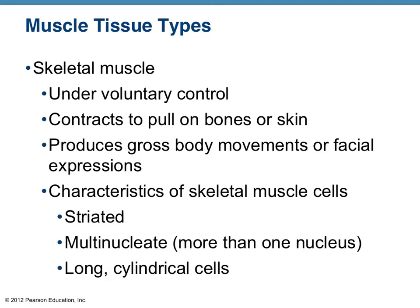Skeletal muscle is also called voluntary muscle — it's under voluntary control. We're not talking about reflex movements, but you can decide to move your arm, flex your bicep, whatever it may be. Skeletal muscle is the main type of muscle; it essentially pulls on the bones in the body.